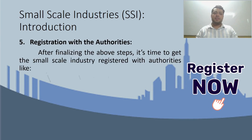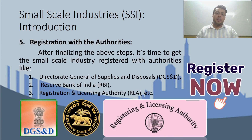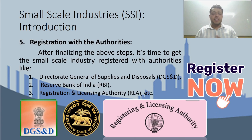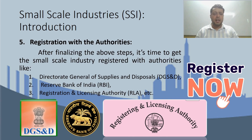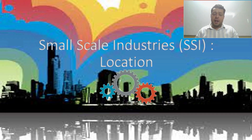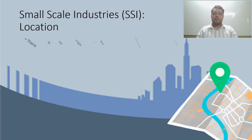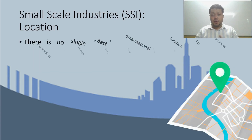After this analysis, you are ready to get your industry registered. This registration happens with different authorities such as DGS&D (Directorate General of Supplies and Disposals), RBI (Reserve Bank of India), and RLA (Registration and Licensing Authority). Now let's talk about the location of small-scale industries — where should their location be?